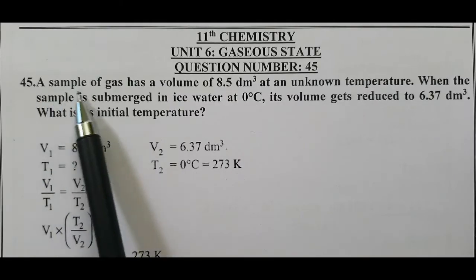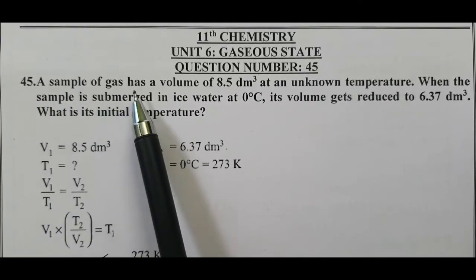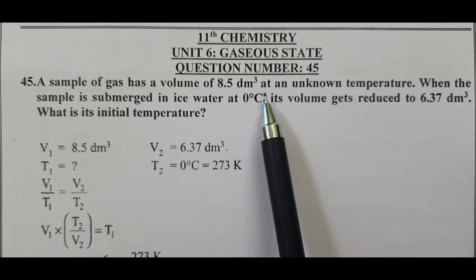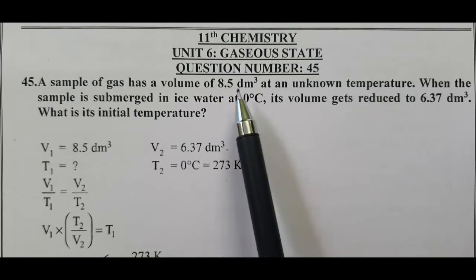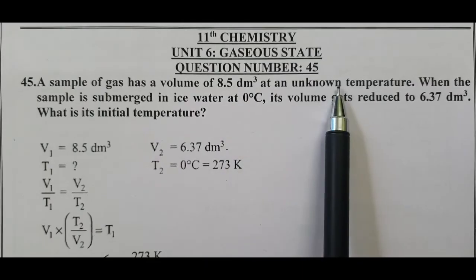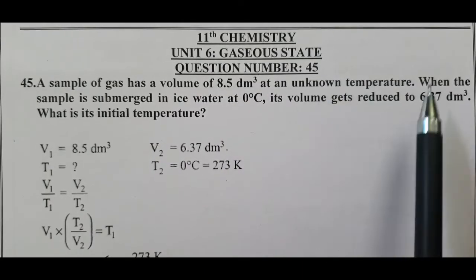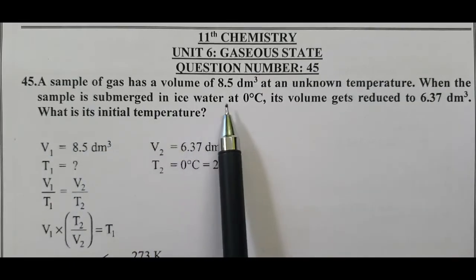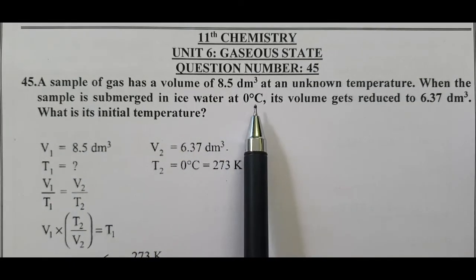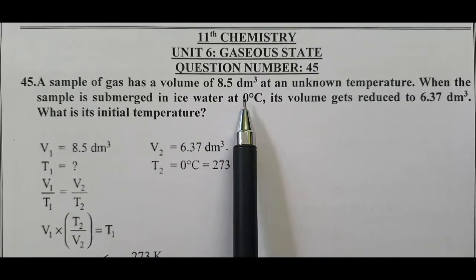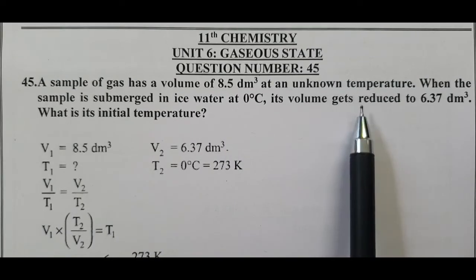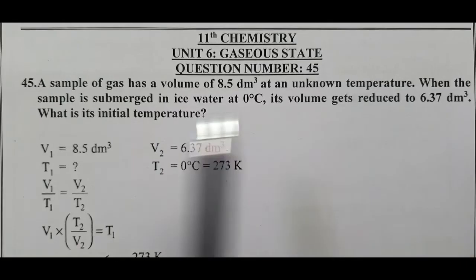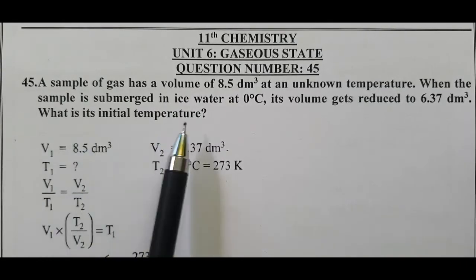A sample of gas has a volume of 8.5 decimetre cube at an unknown temperature. Volume is given, temperature is asked — Charles' Law. When the sample is submerged in ice water at 0 degree Celsius, this is temperature 2, its volume gets reduced to 6.37 decimetre cube. What is its initial temperature?